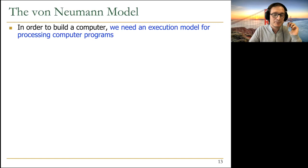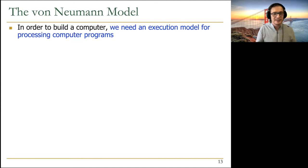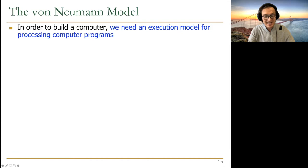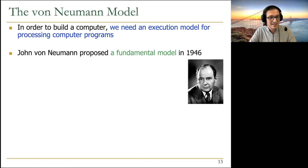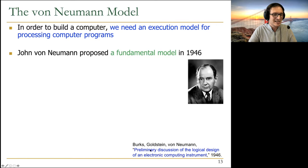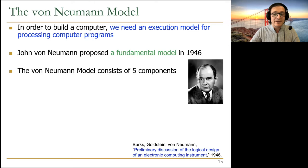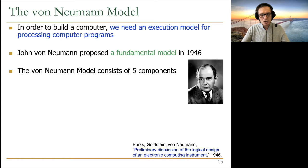To build a computer we also need an execution model for processing computer programs. We're starting with the von Neumann model, which has been the most successful model over decades. It was developed in the 1940s by John von Neumann — in his seminal paper with colleagues in 1946 he proposed a fundamental model. The von Neumann model consists of five components to enable processing of computer programs. What I'm going to describe is a refined version — the principles are exactly the same.